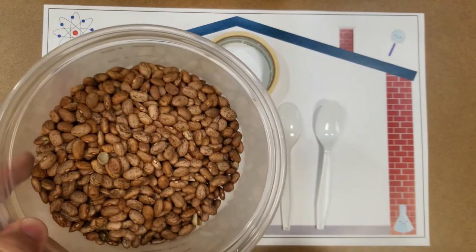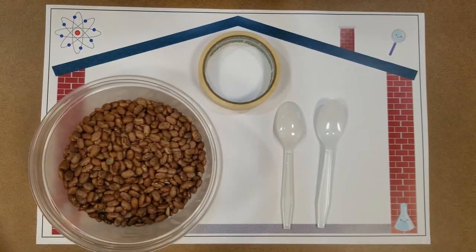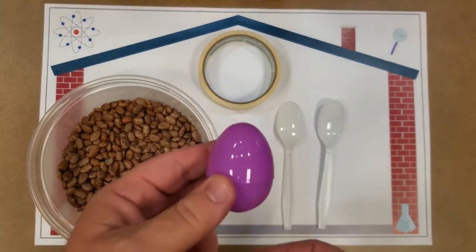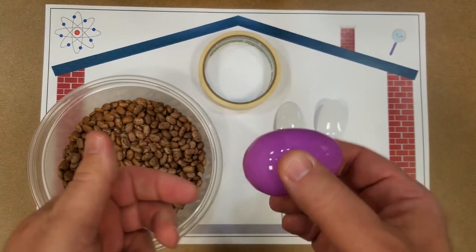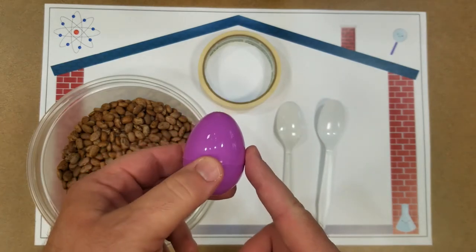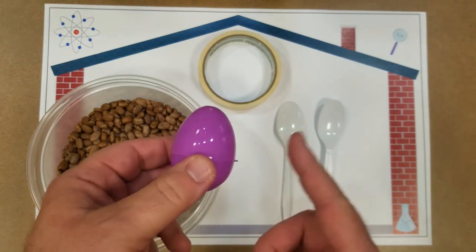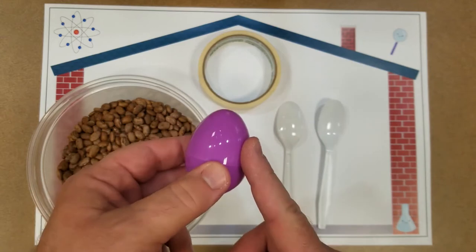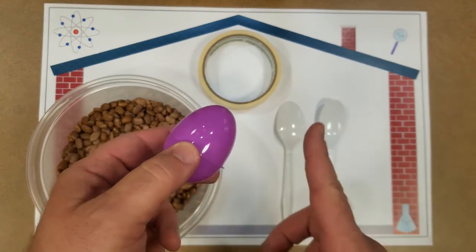And I have a plastic egg. Now this should be something that should be fairly easy to find right now as we're about to do this.